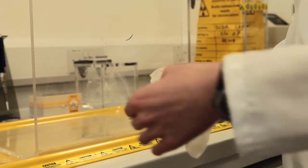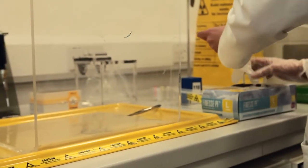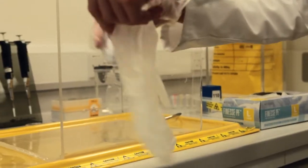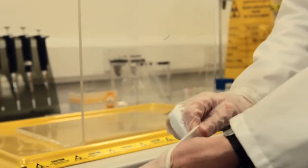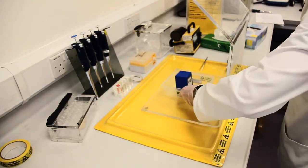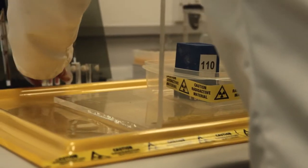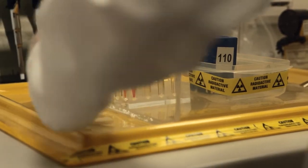David puts on a finger stall and clean nitrile gloves, ensuring a snug fit. He places the container of the radioisotope on the drip tray, behind the Perspex screen.